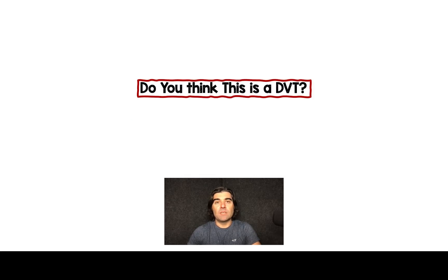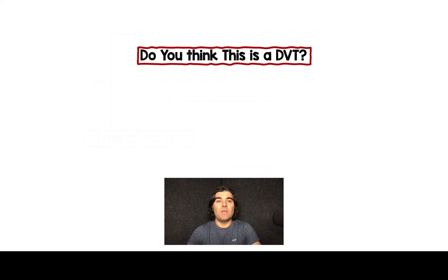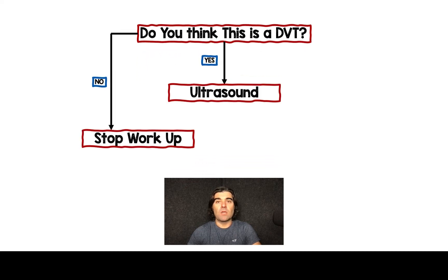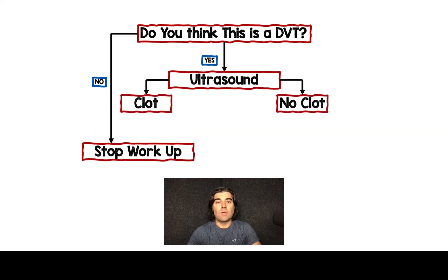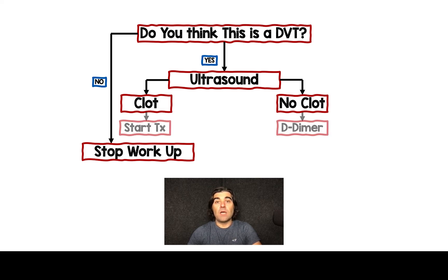It's going to be very similar. Do you think this is a DVT? If the answer is no, then stop the workup — you're done. If you do think it's a DVT, then order an ultrasound. You're going to get one of two outcomes: there's either a clot present in the deep veins, or there's not. If there's a clot present, start treatment with anticoagulation. If there's not a clot, then this is where you're going to order a D-dimer.